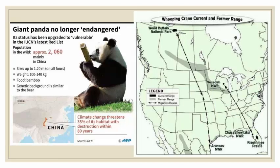There has been a lot of progress because of this legislation. For example, the giant panda is no longer listed as endangered — they've been upgraded to vulnerable. Their population has increased, though their habitat range is still quite small and still under threat, so the outlook remains concerning.